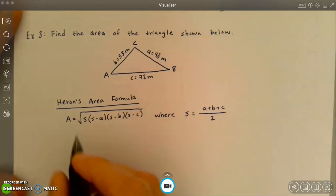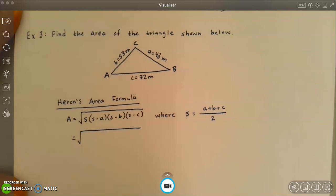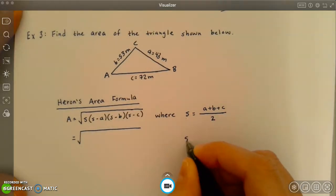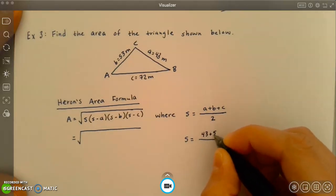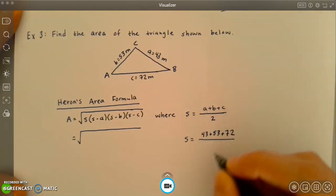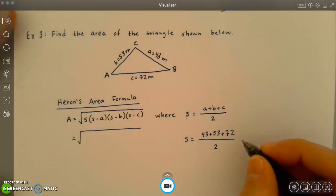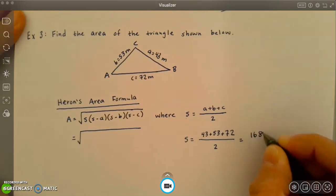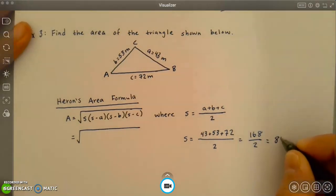I see that in my formula, I need to use s. So let's go ahead and figure out what the value of s is going to be in this specific scenario. So a plus b plus c: I have 43 plus 53 plus 72, all divided by 2. So we're going to get 168 divided by 2, and that gives us 84.